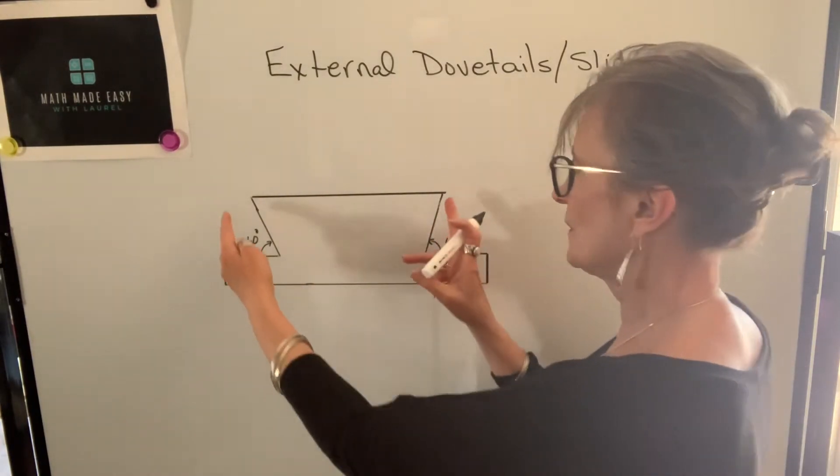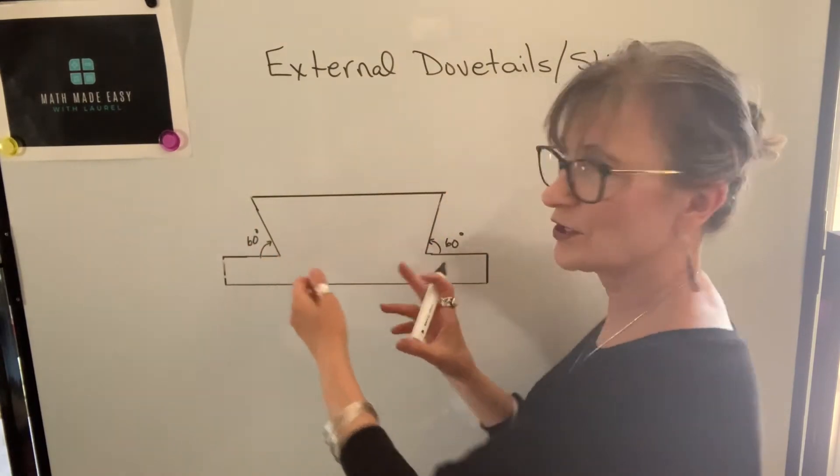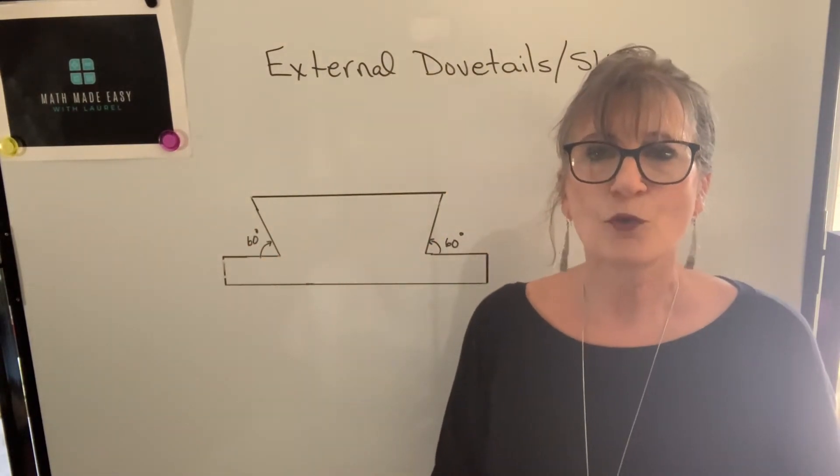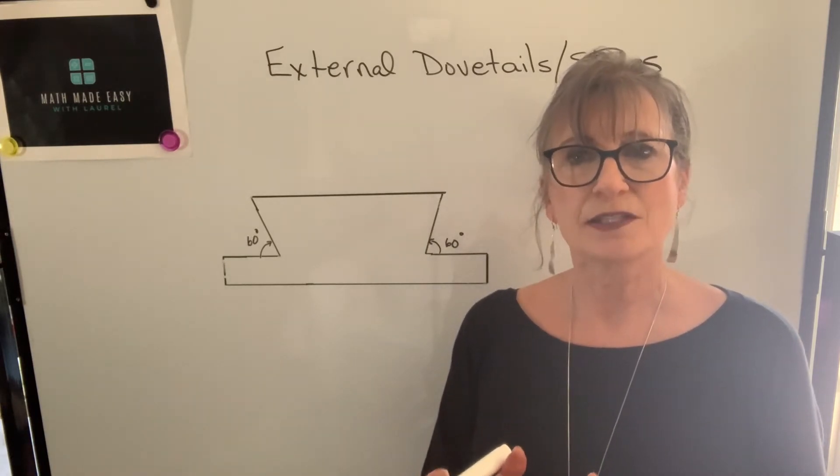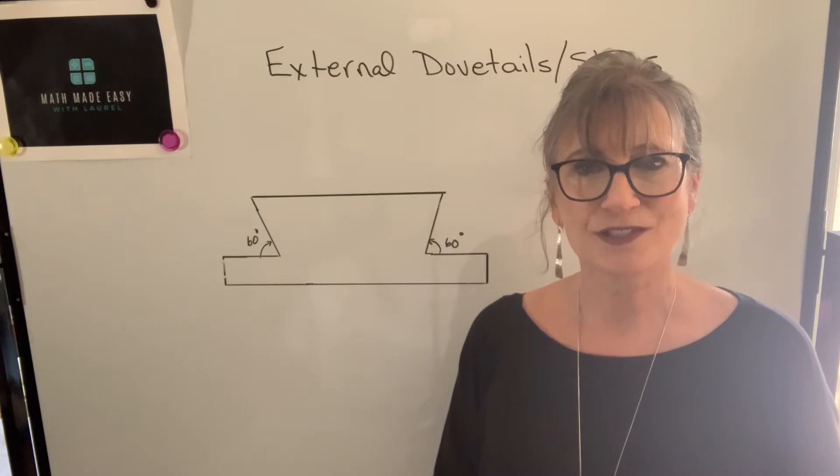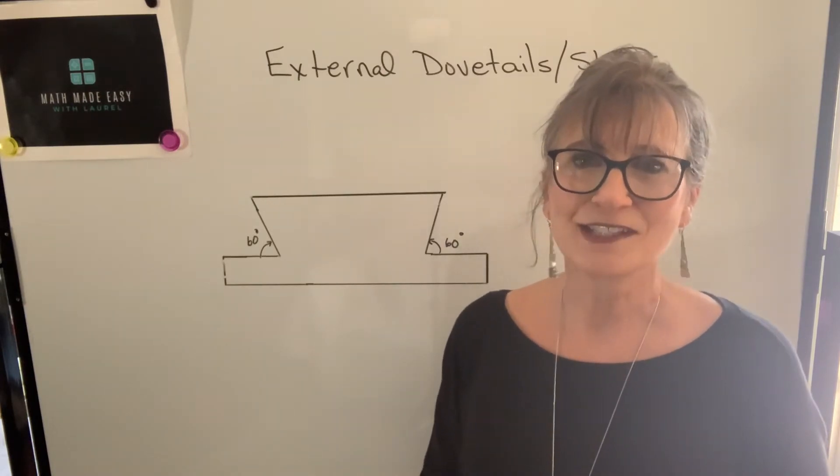It is impossible to measure this dimension or this dimension precisely. Therefore, pins are used and dimensions are found with those pins to check the accuracy or precision of your dimensions. Let's take a look at an example.